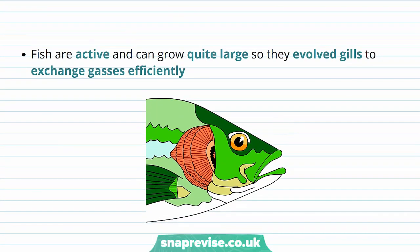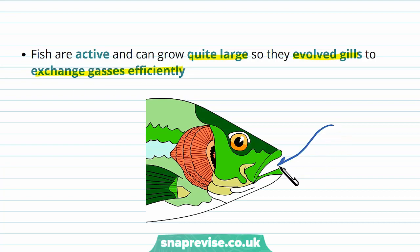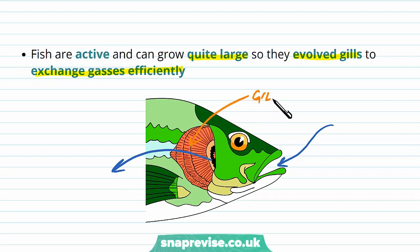Fish are quite active animals, they're always moving, and they can grow quite large in size as well. So they've evolved gills to exchange gases efficiently. The way that they move through the water is that water enters the mouth as they swim, and then it passes out of their body through these gill structures as they move. And these that you can see on the side here are what we call the gills, and these are only found on bony fish.